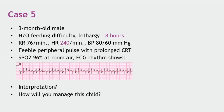Defibrillation delivers a higher shock — like stunning the heart — used in ventricular fibrillation or ventricular tachycardia where there is no R wave to synchronize with. The goal is that when the heart recovers it establishes a new sinus rhythm. In synchronized cardioversion, a lower joule shock is synchronized with the patient's rhythm; in defibrillation, it is not synchronized with the R wave.